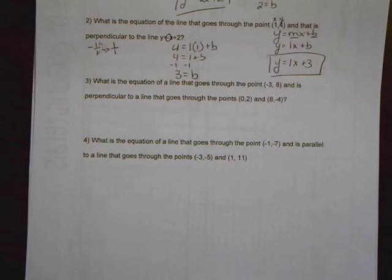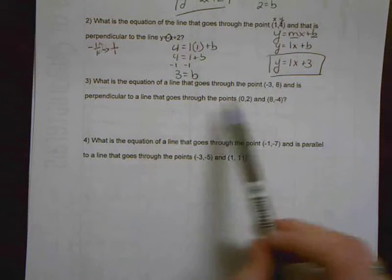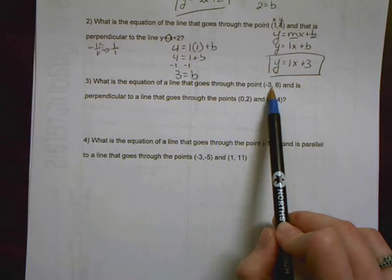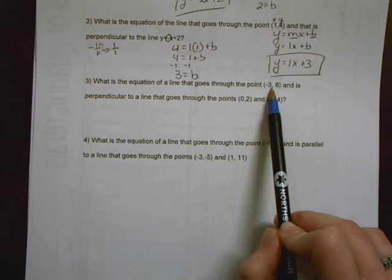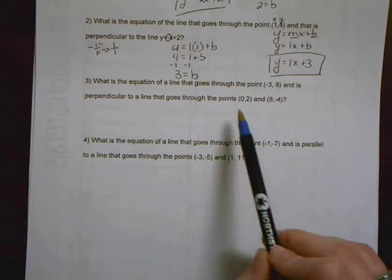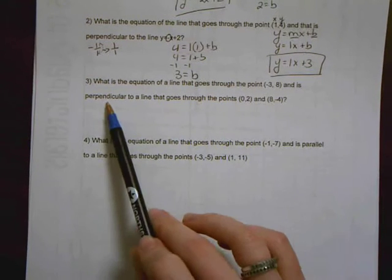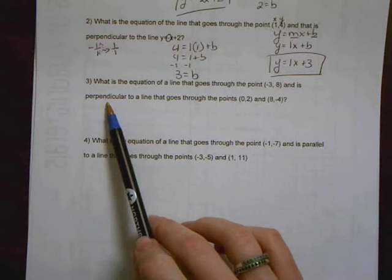All right, so problem three on page seven is another case that you might be given. In this particular problem, we are given an ordered pair that we want our ultimate equation to go through. We're also given two points that are on a line perpendicular to that.